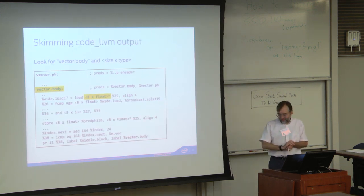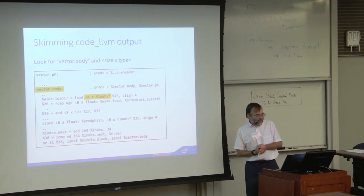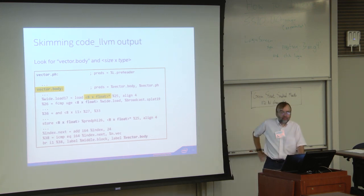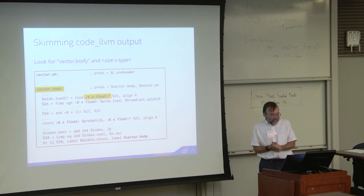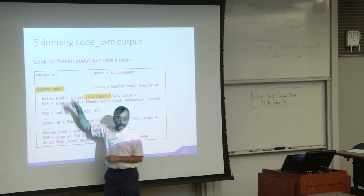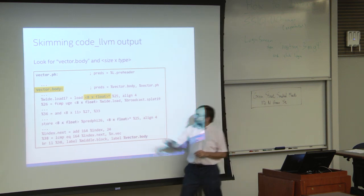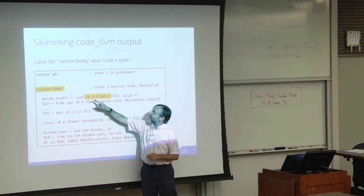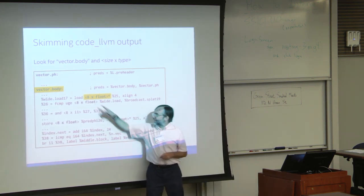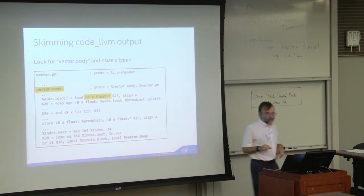To check whether your code vectorized or not is kind of awkward right now. Basically, you have to learn to skim the LLVM code output. Fortunately, it's really easy to skim — you look for a label of 'vector.body' that the vectorizer inserts, and you can also look for vector types like 'N x type', so '8 x float' indicates a SIMD type of eight floats.